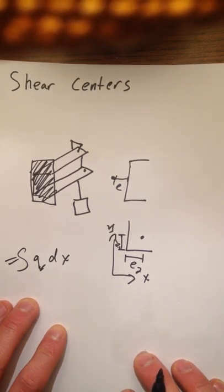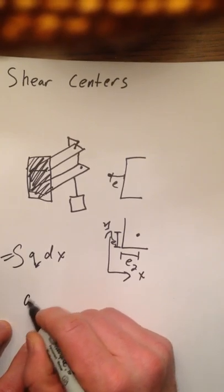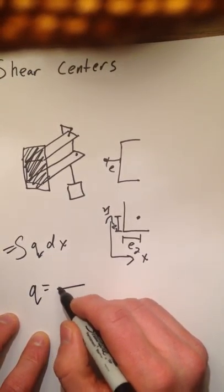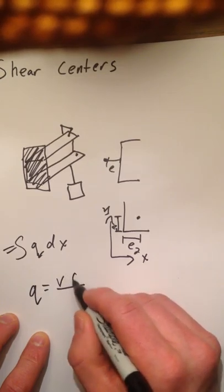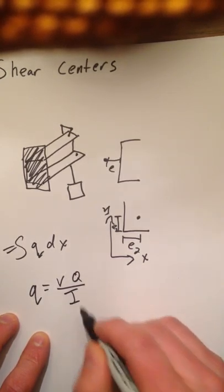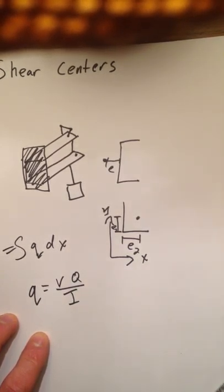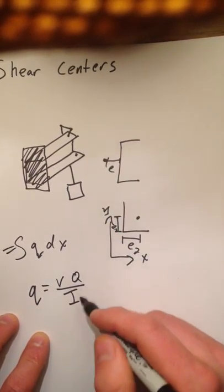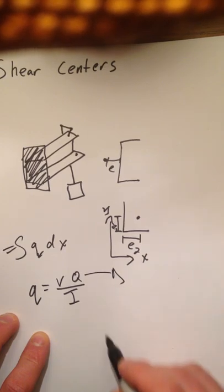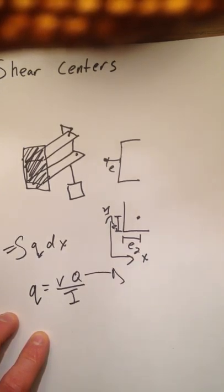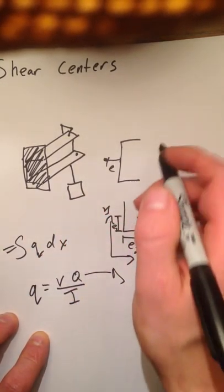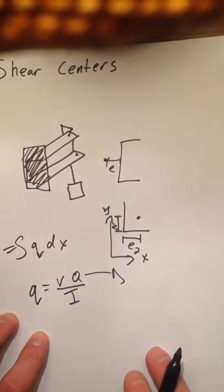It's escaping my memory of what it is exactly, but I know what's in little q. That is V times Q over I. I is the moment of inertia of the section. Big Q is basically a new, alternate y-bar or alternate centroid.